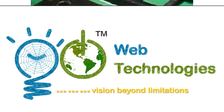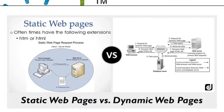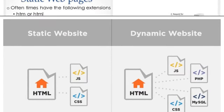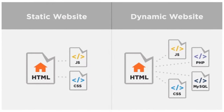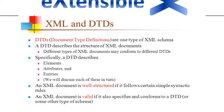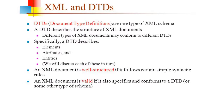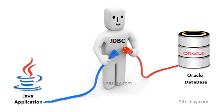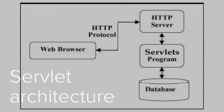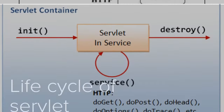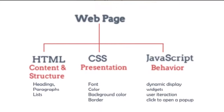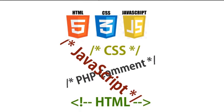The next lab is web technologies lab. The main objectives are to create static and dynamic web pages, to create DTD and XML schema for defining XML documents, to develop pure dynamic web applications using JDBC, and to develop server programming dynamically using servlets and Java Server Pages.